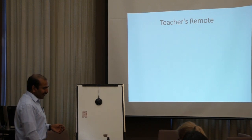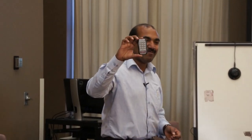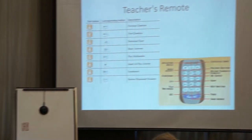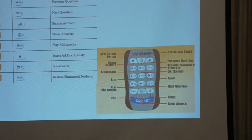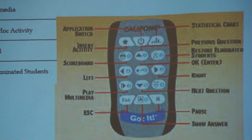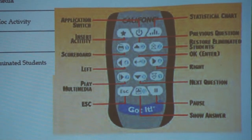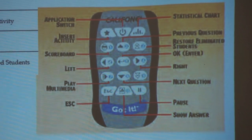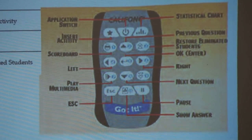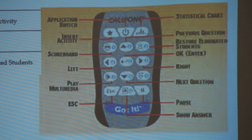Let us look at the teacher's remote. In this teacher's remote you will see different options. The first is the application switch, so you can switch the application. Then there is the statistical chart, which gives you the whole statistics of students. If you want to show the answer, you press the show answer button. You can also play multimedia — songs or pictures — in your presentation or quiz.